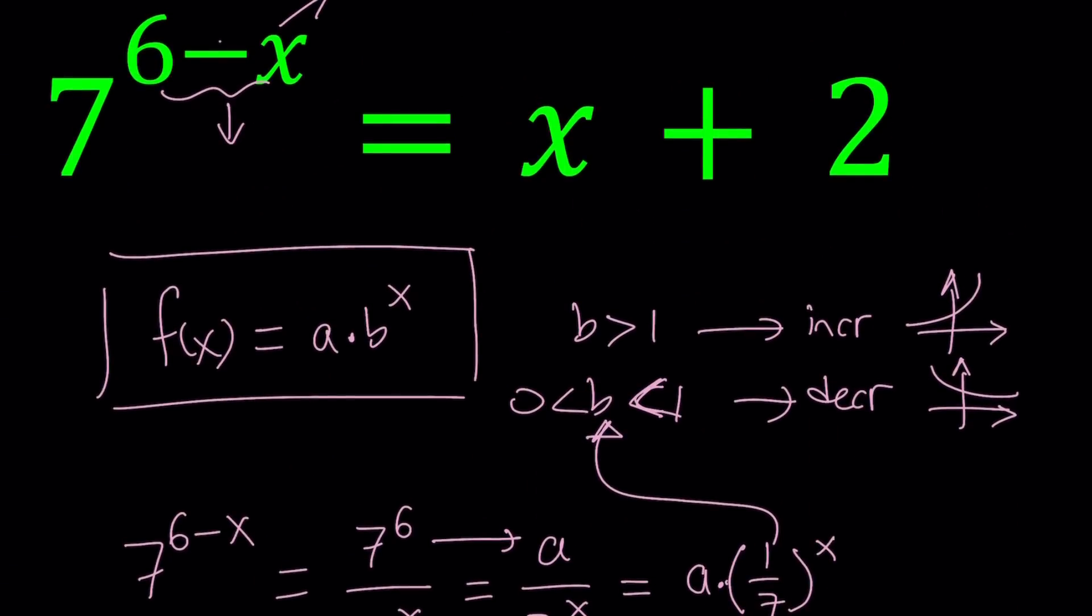What about the right-hand side? Oh, come on. You can use derivatives if you want. The derivative of x plus 2 is 1. That's positive. So, it's increasing. But you also hopefully know how to graph linear functions. This is a straight line, and it has a positive slope. Therefore, it is increasing.